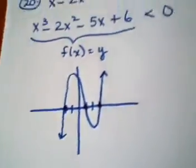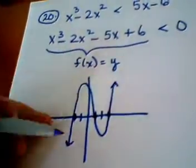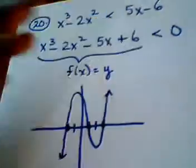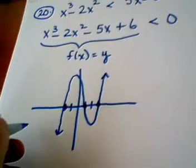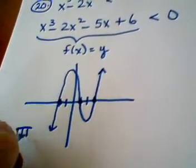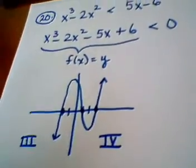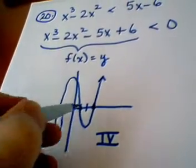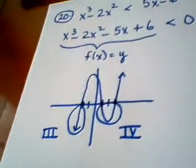Now what we want to do here is we want to find out where the y value is less than zero. Y is less than zero in quadrant 3 and in quadrant 4. So whatever part of my graph lies down there is going to provide me my answer.